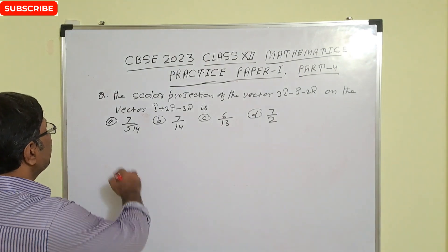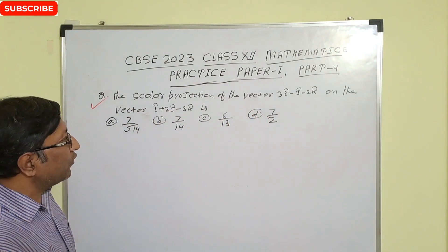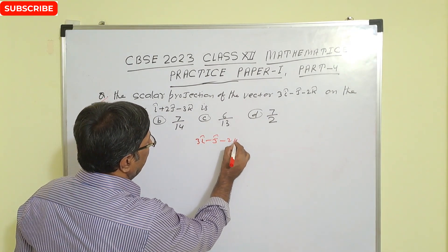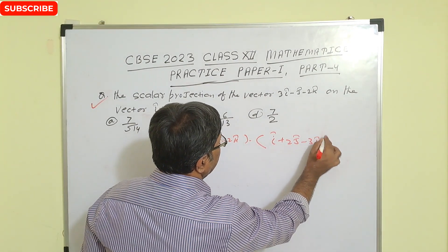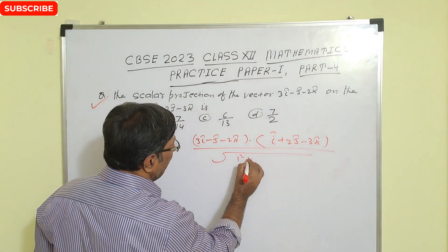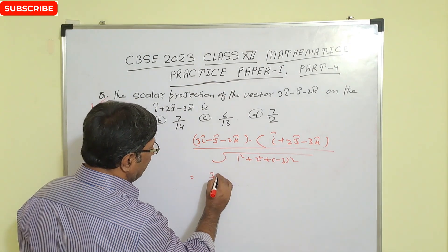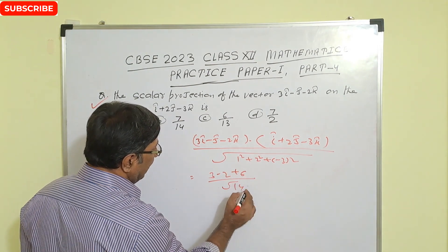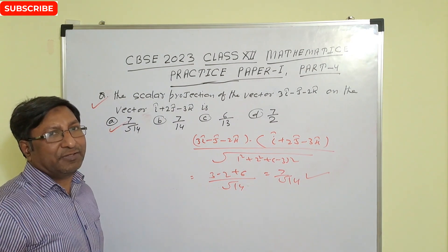Next question: find the scalar projection of vector (3i - j - 2k) onto vector (i + 2j - 3k). We find the dot product: 3×1 = 3, (-1)×2 = -2, (-2)×(-3) = 6, total = 7. Divided by the magnitude of the second vector: √(1² + 2² + (-3)²) = √(1 + 4 + 9) = √14. So the answer is 7/√14.